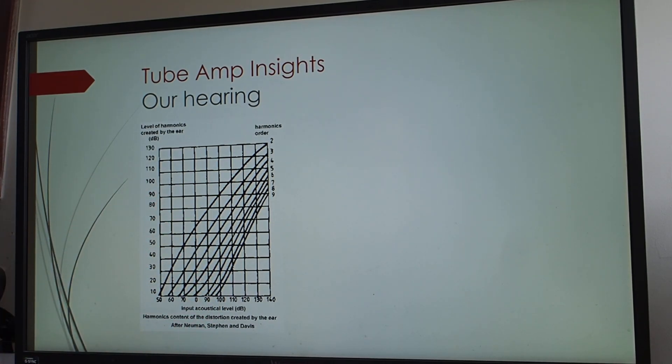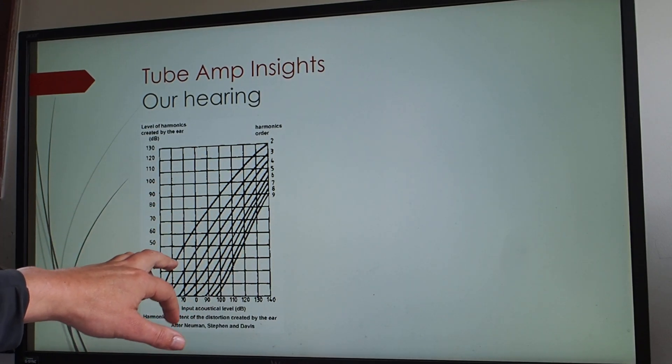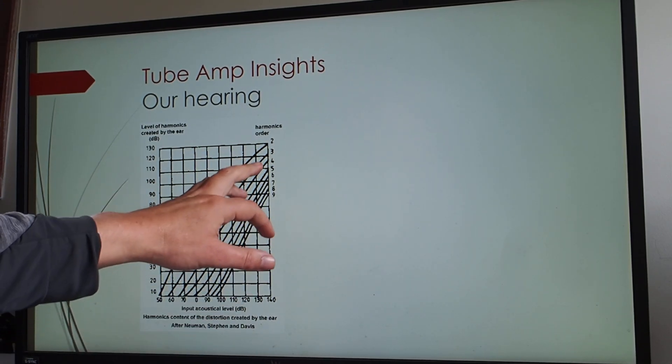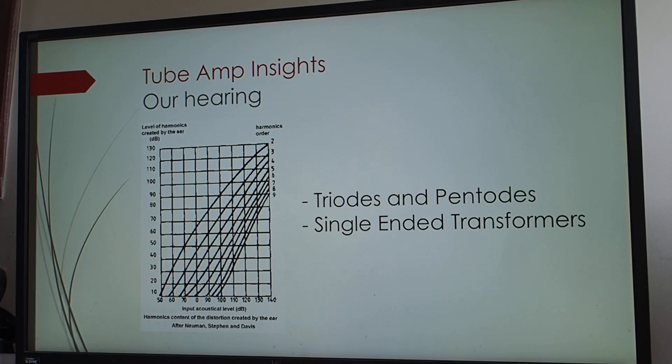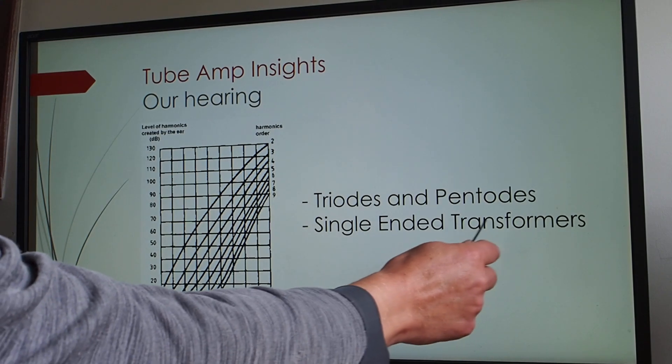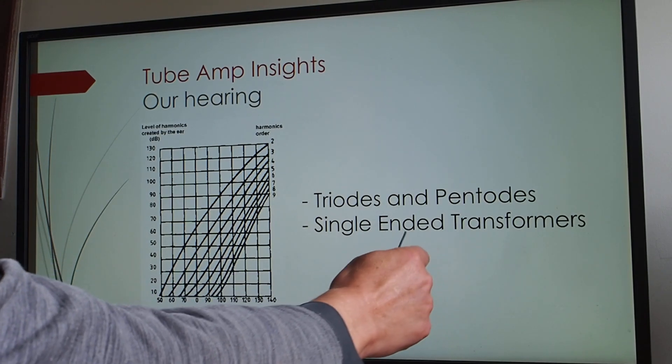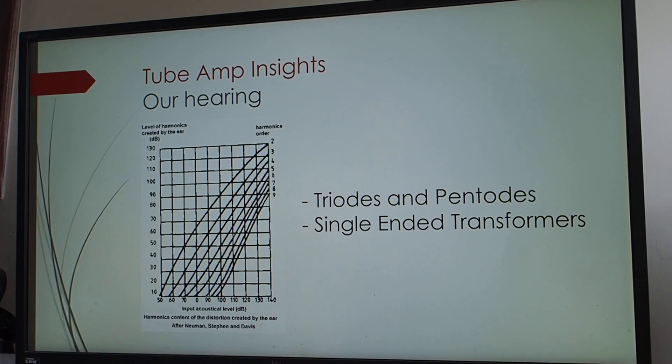The interesting bits are, there are types of technology that we have in our kitty bag that, for example, produce mostly second harmonics and much less third, much less fourth, and non-existent later. Those things we call triodes and pentodes. And actually, single-ended transformers, if you look at the distortion pattern, it's mostly second.